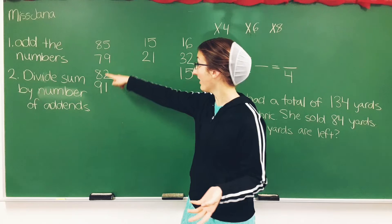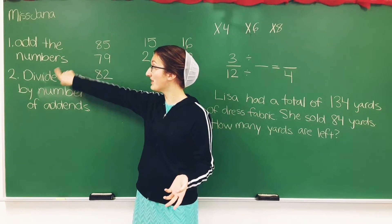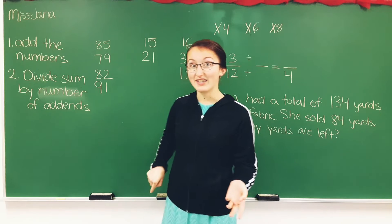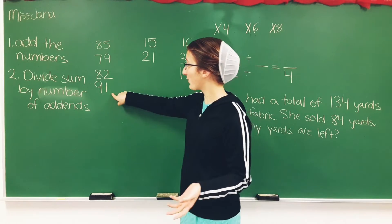I wrote down the two steps up here. First we add the numbers, and then we divide the sum by the number of addends. So let's go ahead and do the first one.